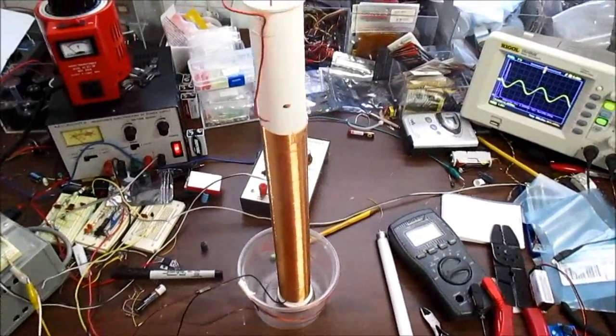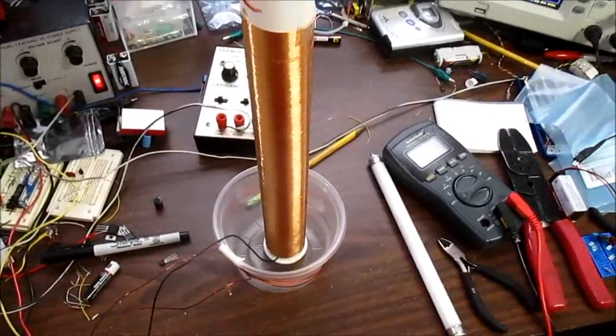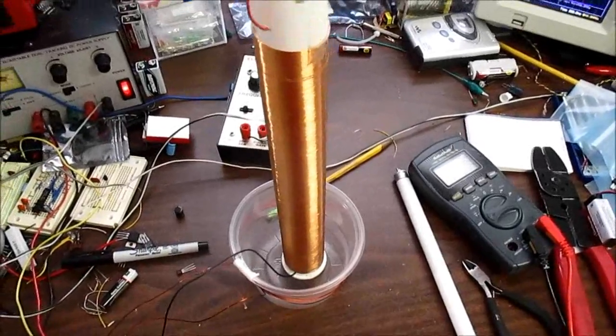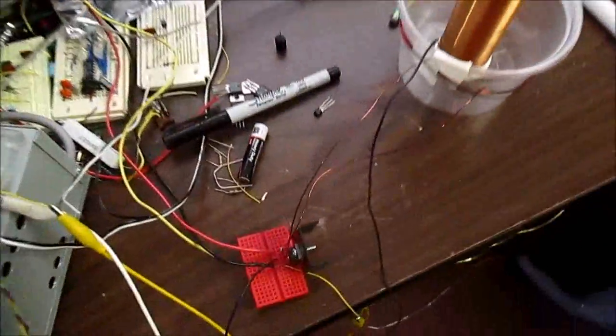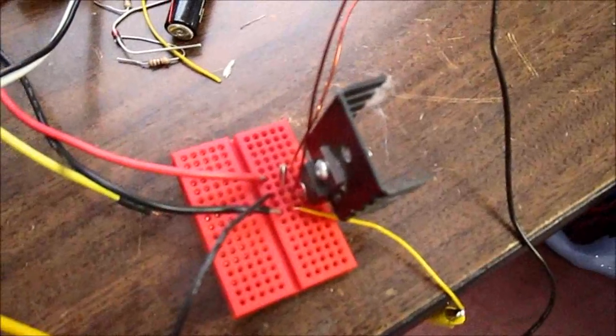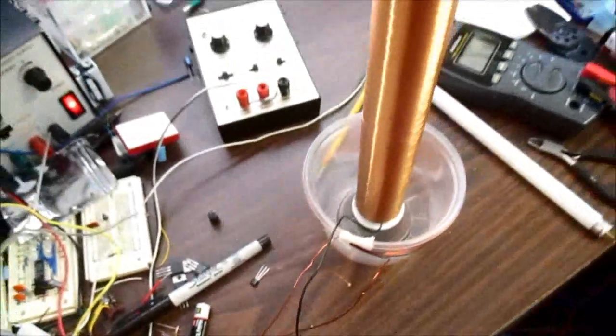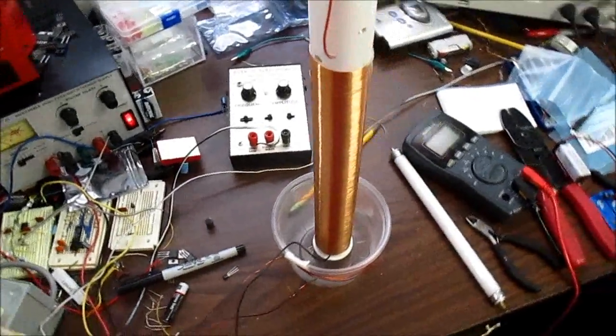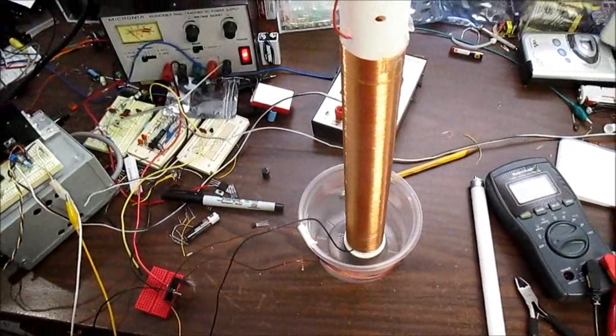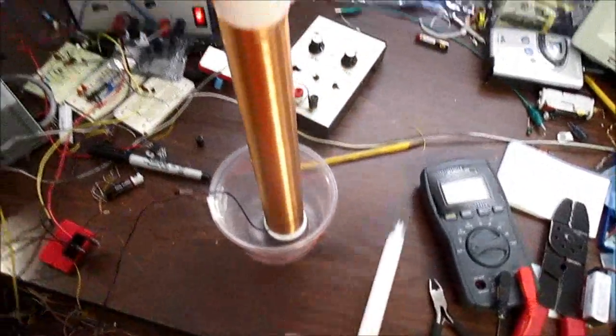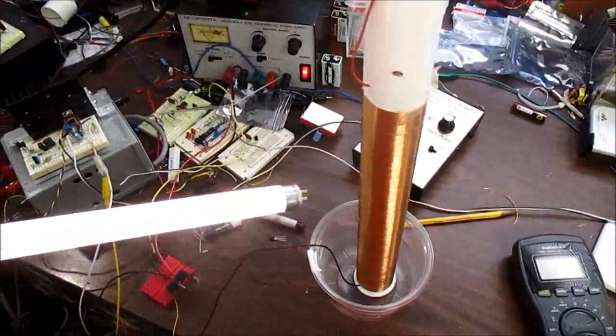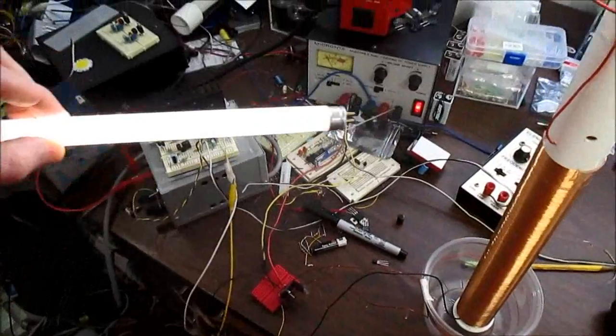Okay guys, playing with what's called a Slayer exciter. Very simple circuit, just has one transistor, a couple of components, and the coil. We'll take a look at the schematic momentarily, but as you can see it turns this light on.